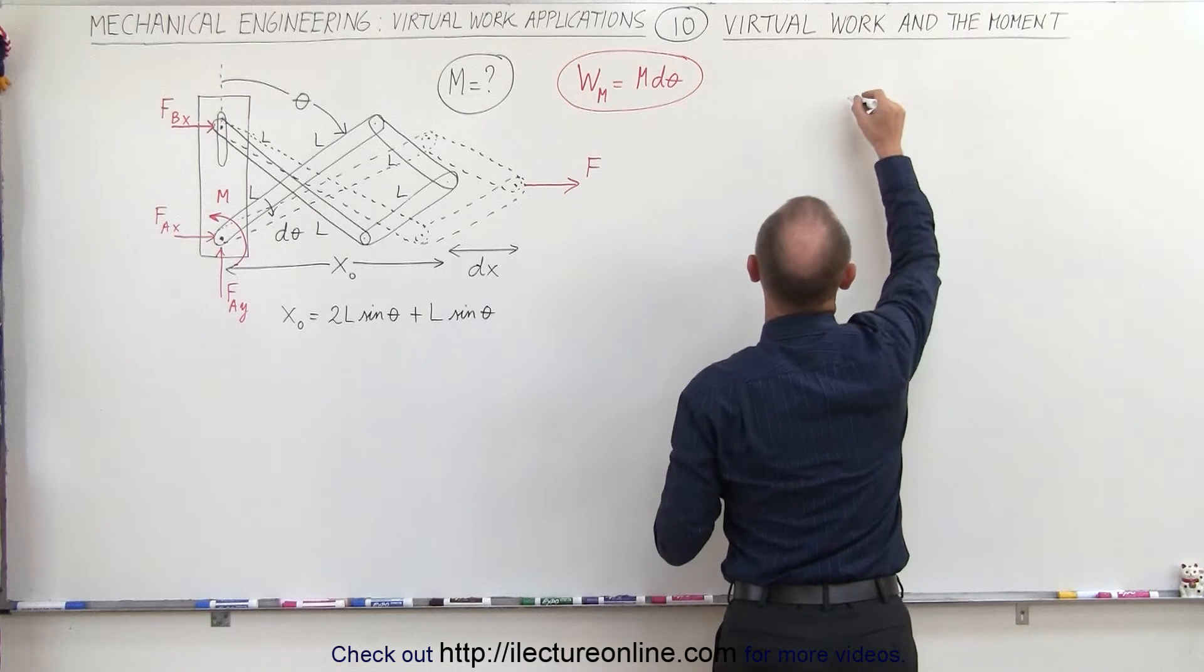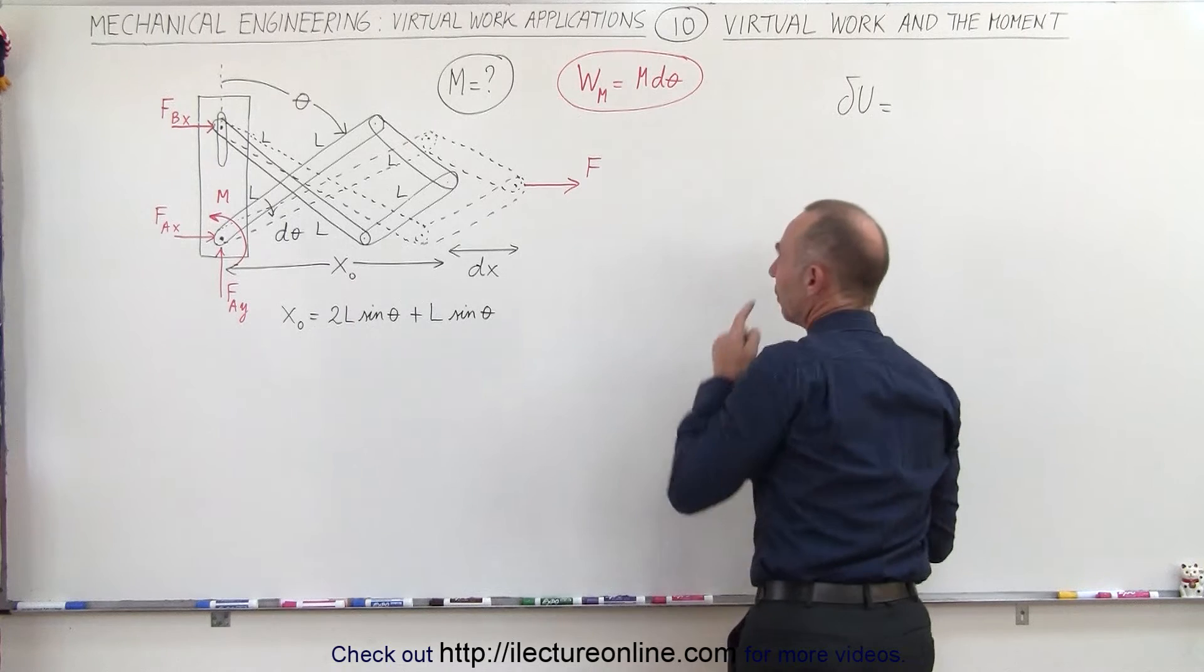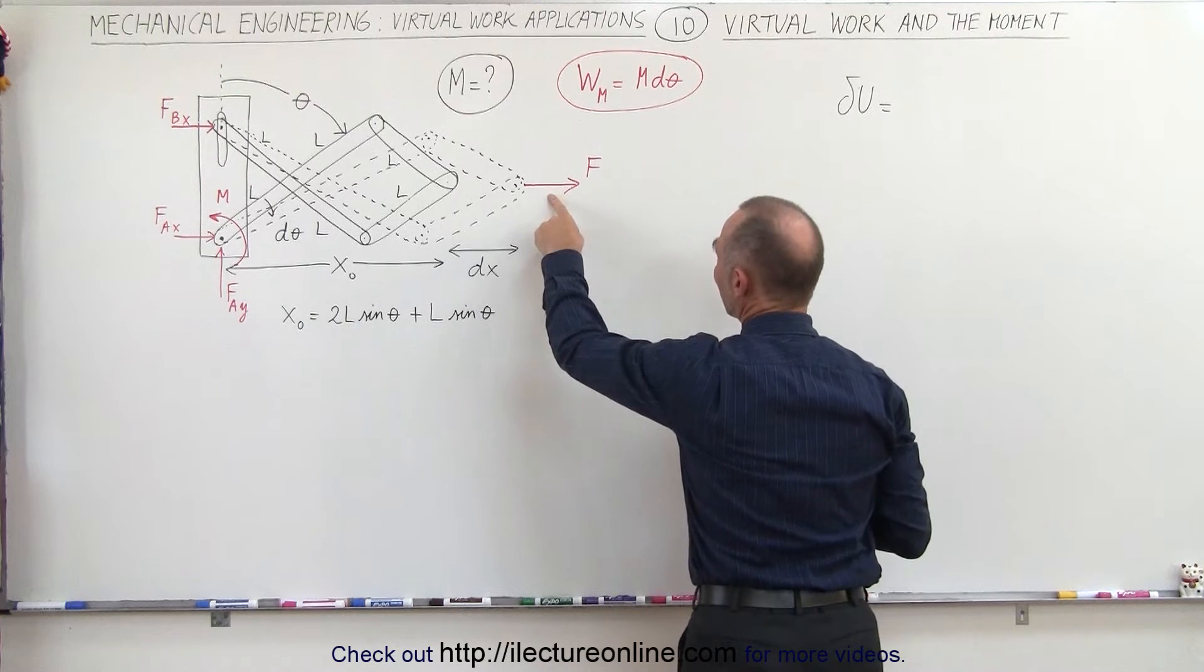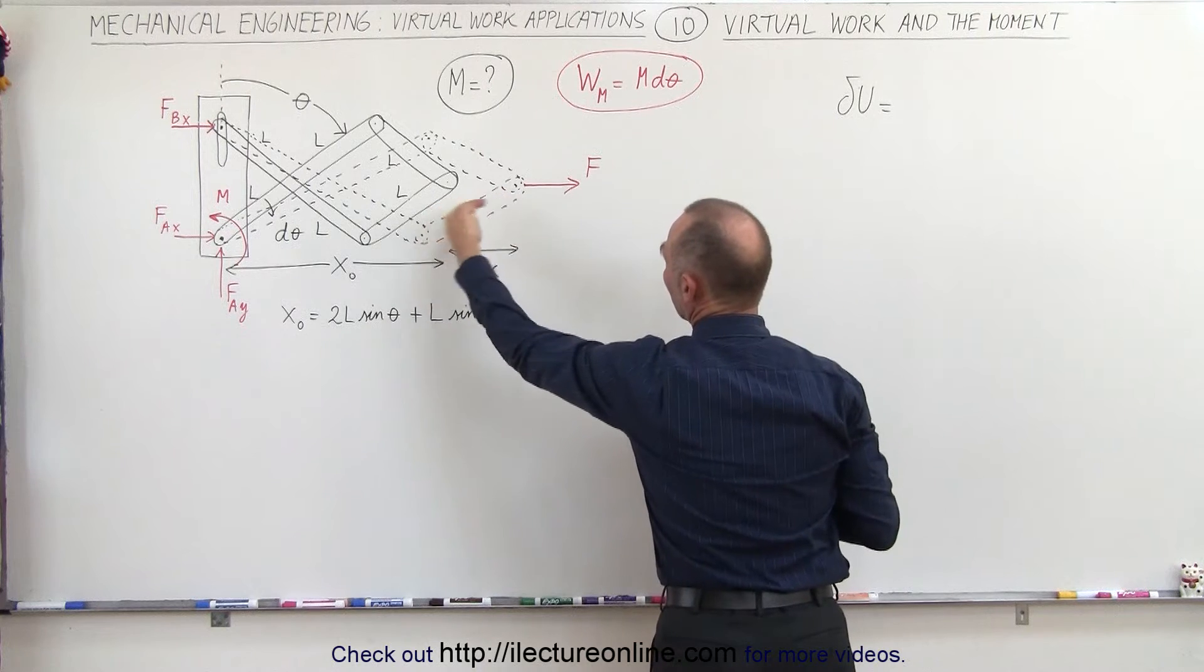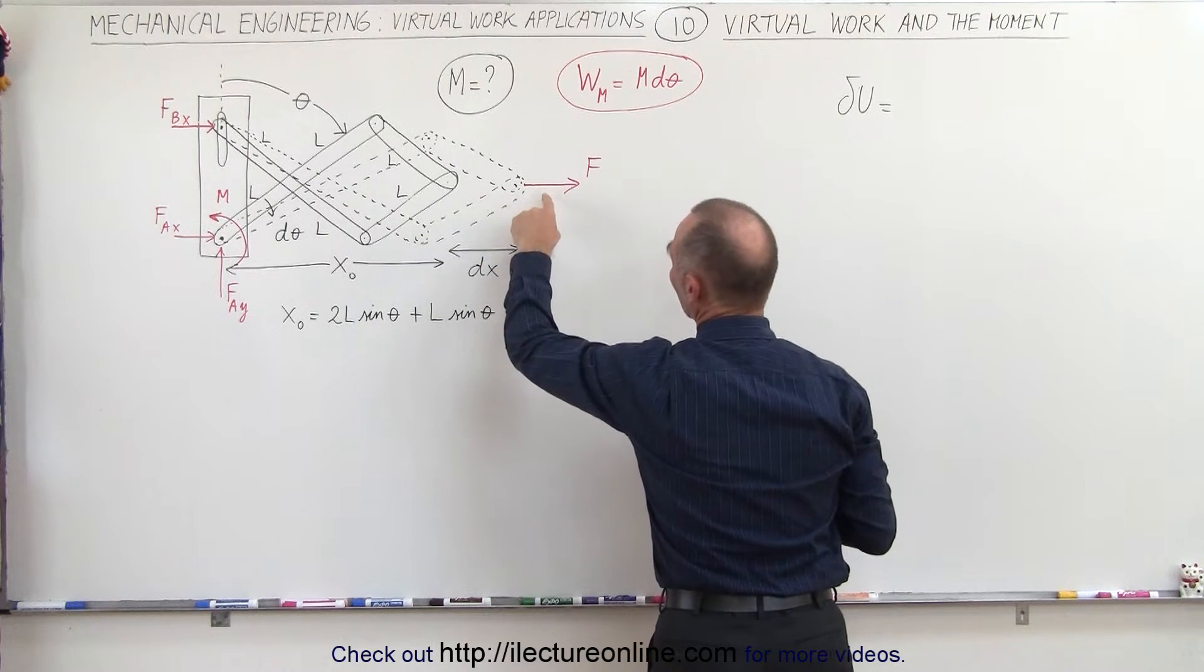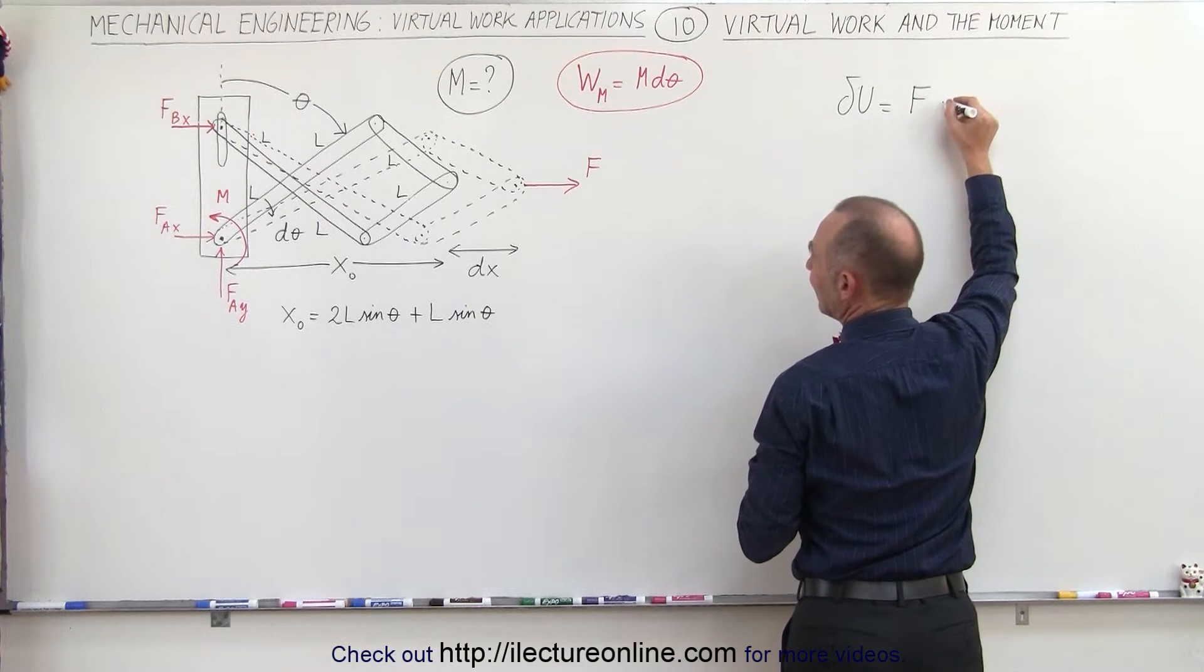The virtual work is going to be equal to, well first it's caused by this F here and the direction of the force and the direction of displacement is in the same direction so it's times the cosine of zero which is one, so therefore we have the force times dx.